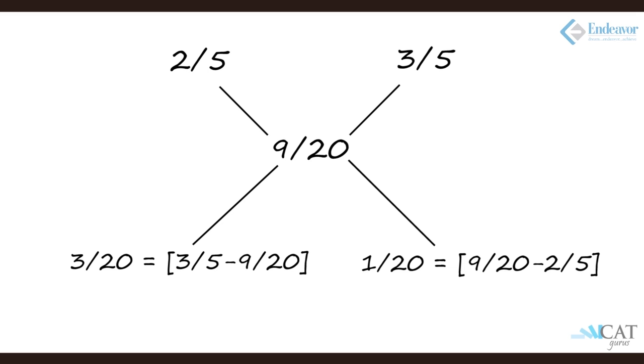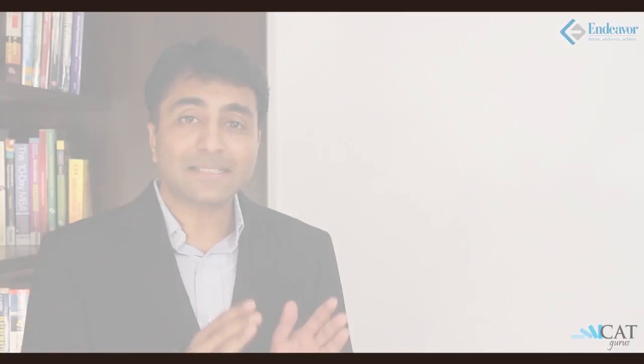So alloy A and alloy B will be in the ratio 3/20 is to 1/20, which simplifies to 3 is to 1. If I mix 3 units of alloy A to 1 unit of alloy B, I will get the desired ratio of zinc and tin as 9 is to 11 in the new mixture.